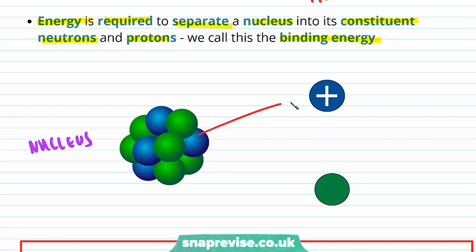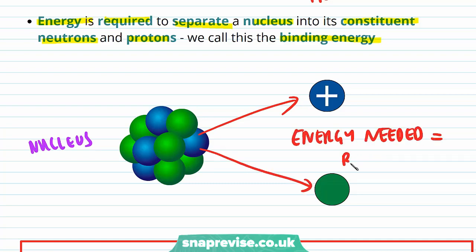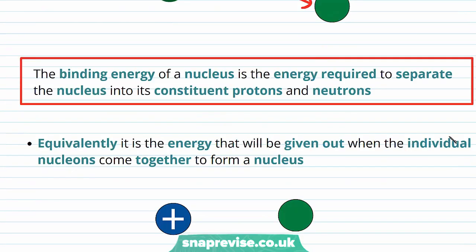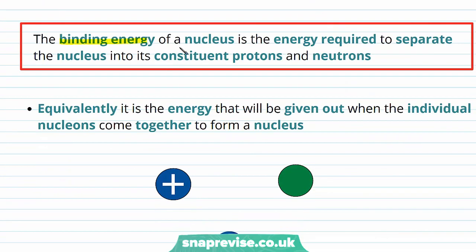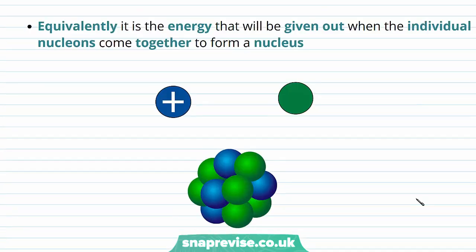So to separate the nucleus out into all its different nucleons, the energy needed is called the binding energy. The binding energy of a nucleus is the energy required to separate the nucleus into its constituent protons and neutrons. Equivalently, it is the energy that will be given out when the individual nucleons come together to form a nucleus.